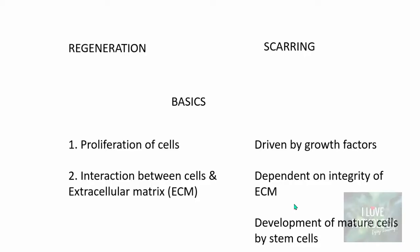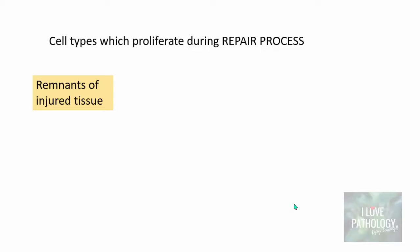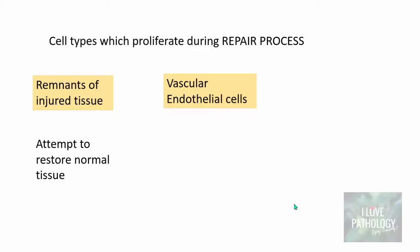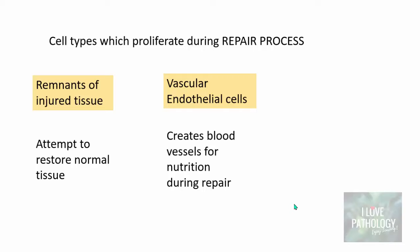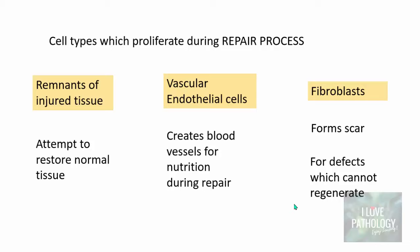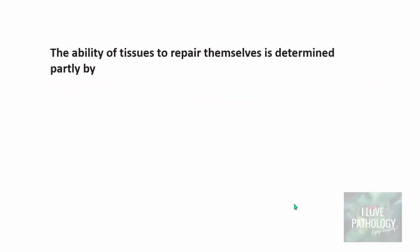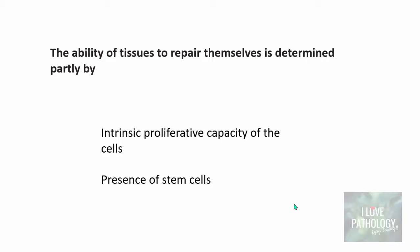The repair process is also dependent on the development of mature cells by progenitor cells or stem cells. Three important cell types proliferate during repair: one, the remnants of the injured tissue which attempt to restore normal tissue; two, the vascular endothelial cells, whose proliferation creates blood vessels — essential for nutrition of cells during repair; and three, fibroblasts, which synthesize collagen, form scars, and fill defects in tissues where cells cannot regenerate. The ability of tissues to repair themselves is determined partly by the proliferative capacity of cells and the presence of stem cells.